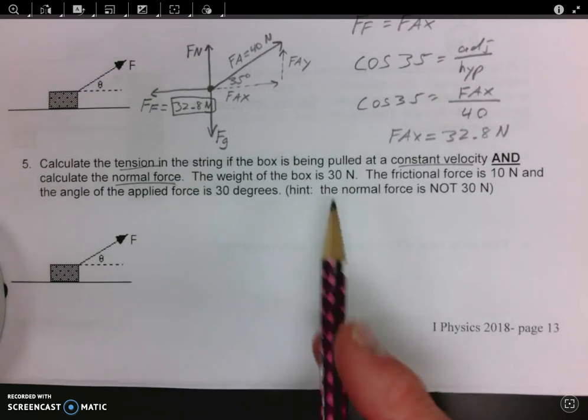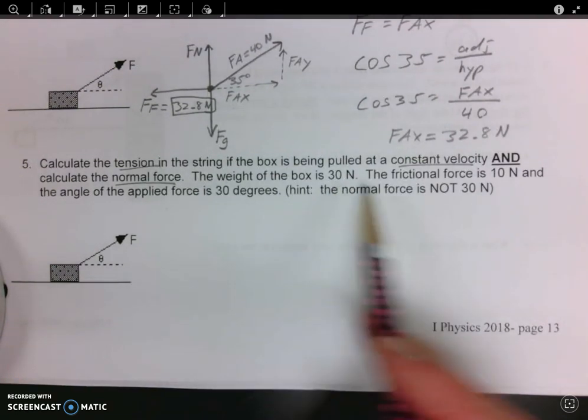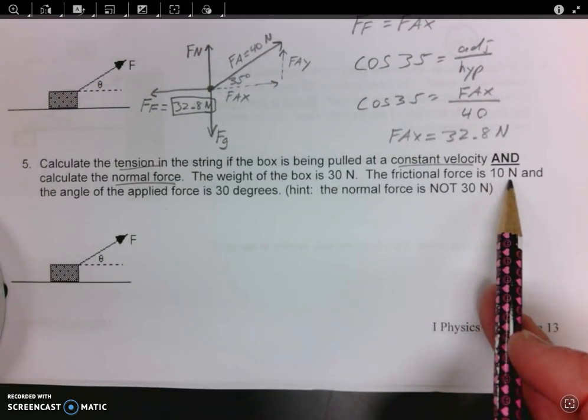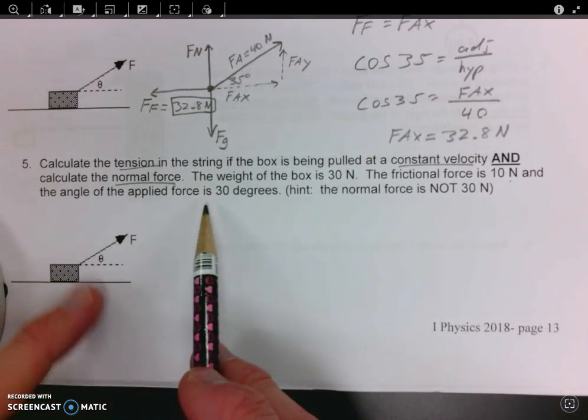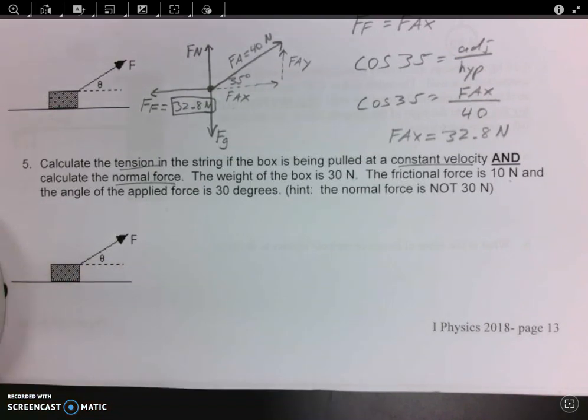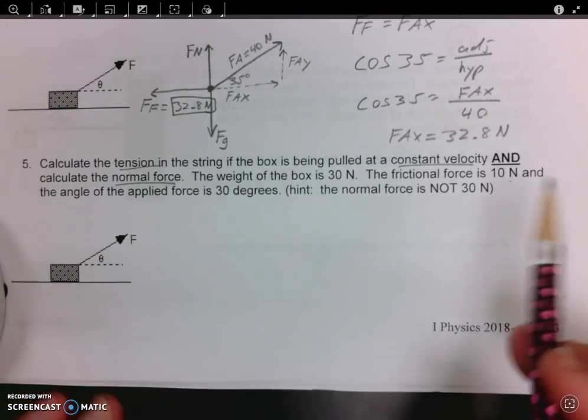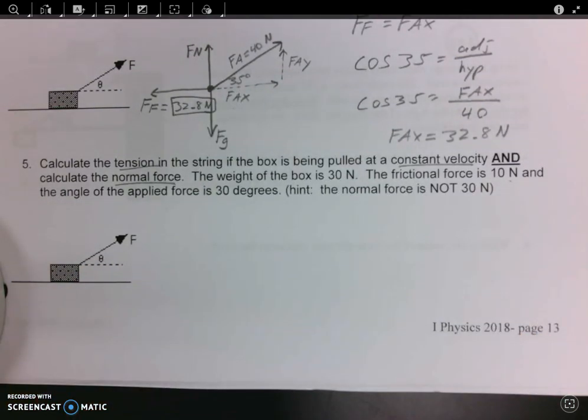The weight of the box is 30 newtons, the frictional force is 10 newtons, and the angle of the applied force right here is 30 degrees. Here's a hint: the normal force is not going to be 30 newtons.